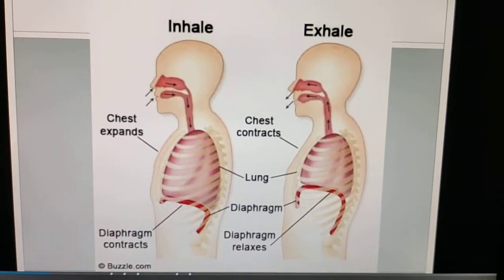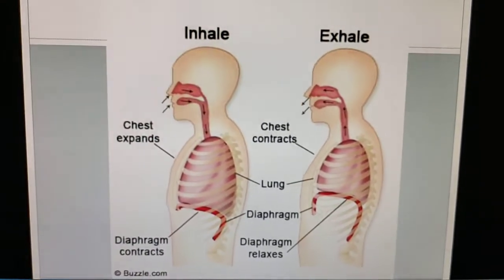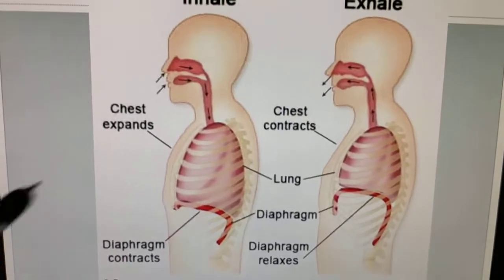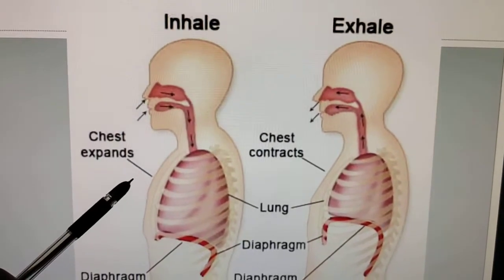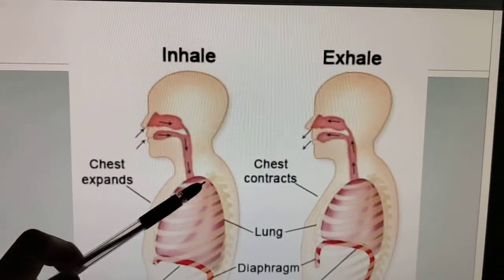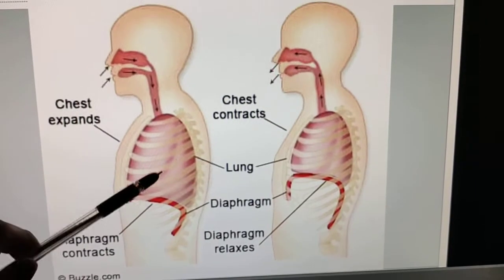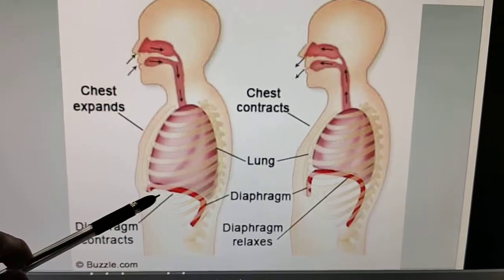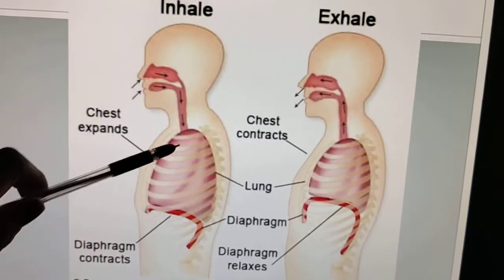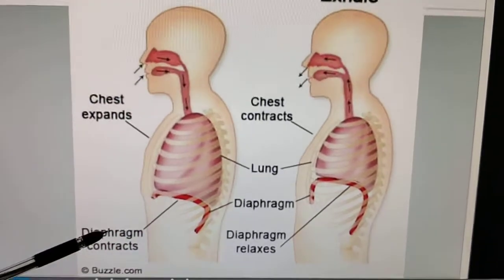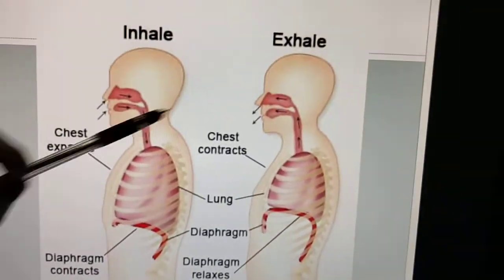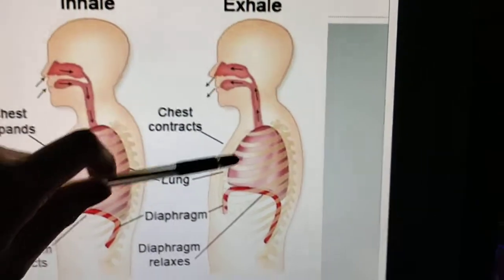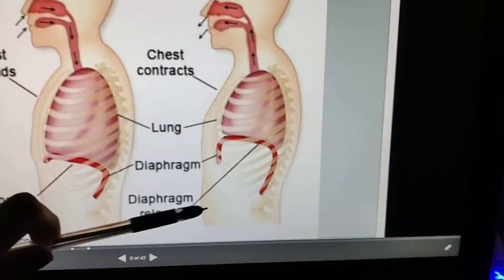Now the physiology of respiration: during inhalation — taking in oxygen — the chest expands and the diaphragm contracts. During exhalation or expiration, the chest contracts and the diaphragm relaxes. This is the normal physiology of respiration.